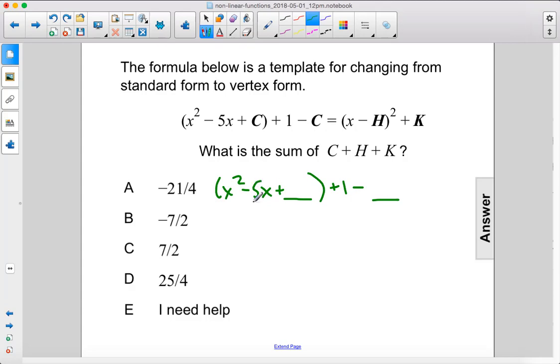We have 5 here. So when we divide 5 by 2 and then square it, we get 25 over 4. That is what we will add and what we will subtract.